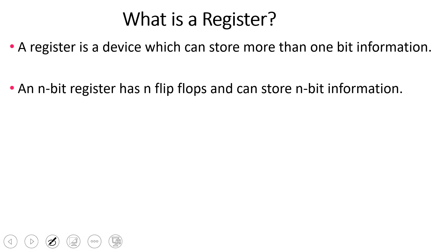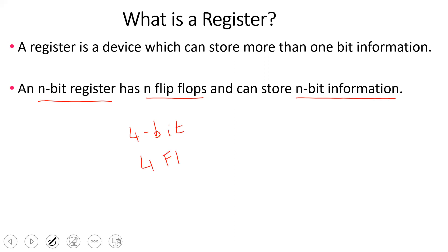If we have an n-bit register, we can store n bits of information. For example, to store 4-bit information, we need 4 flip-flops — that is a 4-bit register. To store 6-bit information, we use 6 flip-flops. This is the definition of a register.